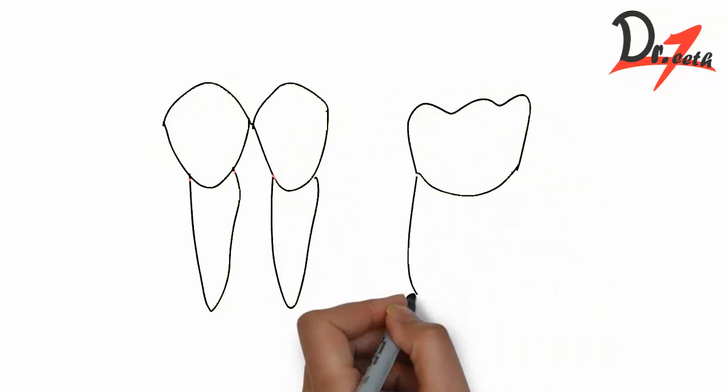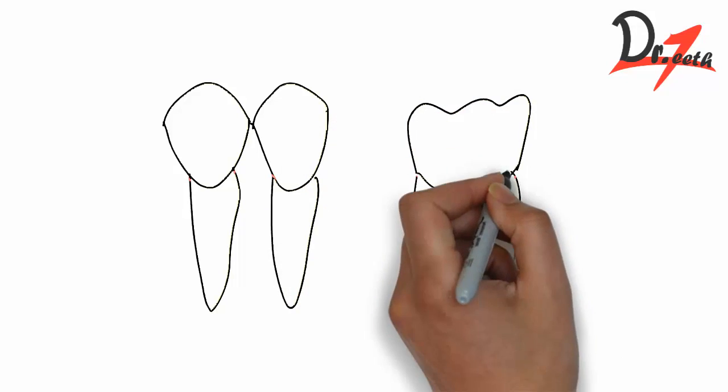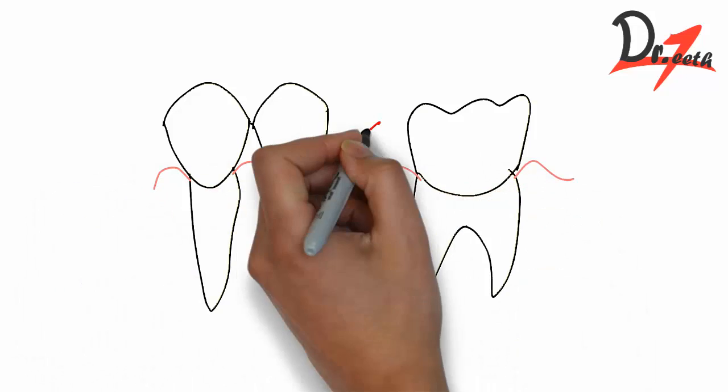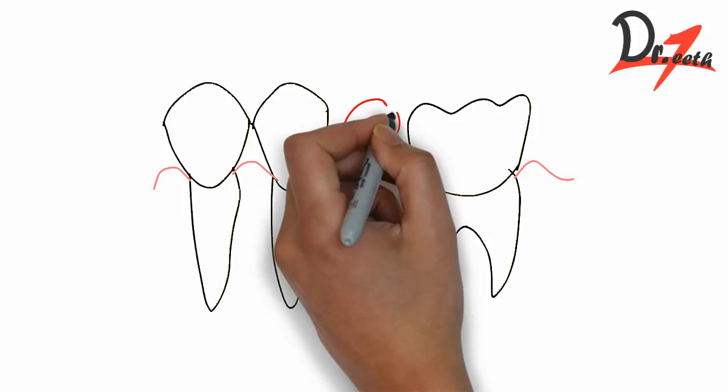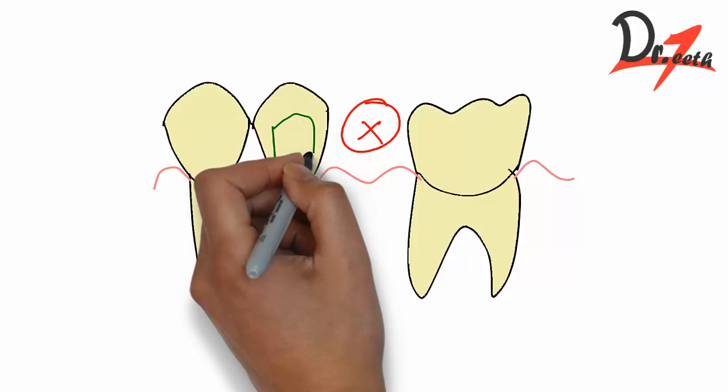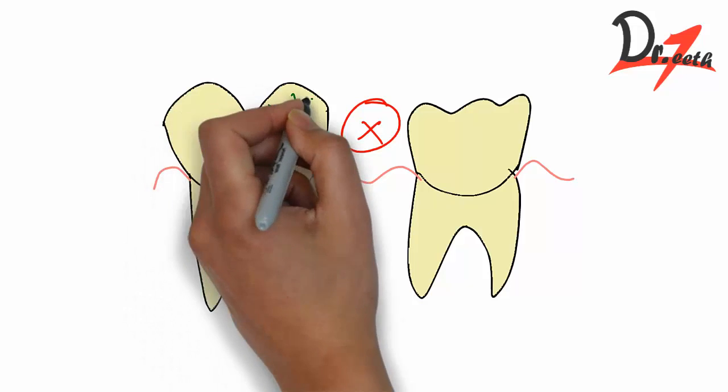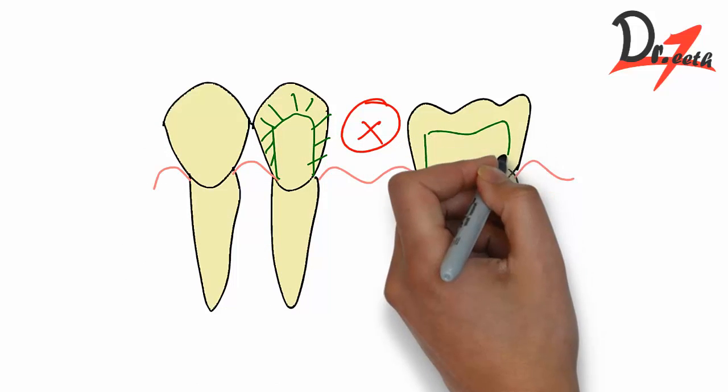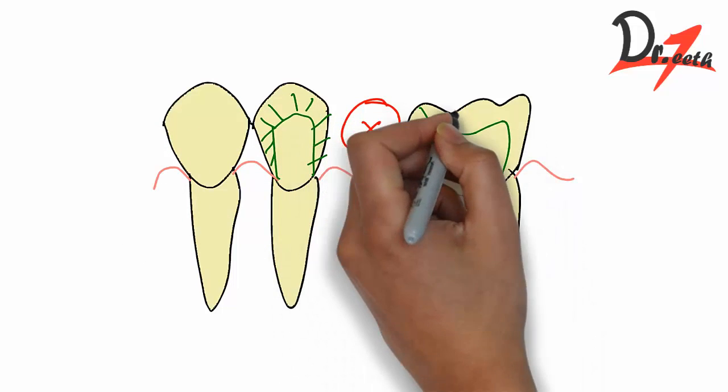This is a general overview of what is fixed partial denture, what are the indications, and what are the parts of the fixed partial denture. If we have a patient and some teeth are missing, as a dentist we have some options. Either we will give a removable denture or we will give a fixed denture. In fixed denture, we prepare our teeth and fix it permanently. We prepare the entire crown portion.